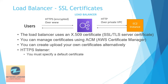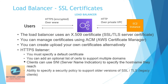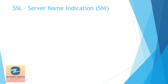You must specify a default certificate. You can add an optional list of certificates to support multiple domains — multiple applications using multiple certificates is possible. This brings us to the next point: SNI, or Server Name Indication, which is important if you're using multiple certificates. AWS can also specify a security policy to support older versions of SSL and TLS, so legacy versions are supported as well.